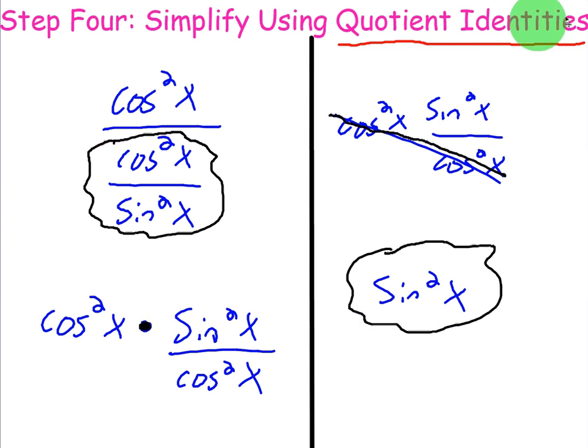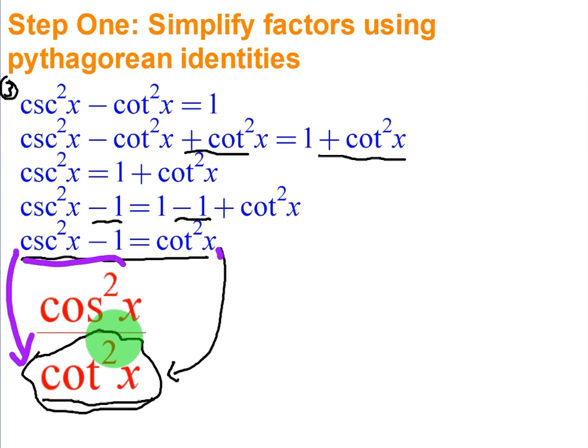Step four is to simplify using quotient identities. So now that it's a single term, we're going to turn everything into sine and cosine. Now the top is already cosine squared, however, the bottom...